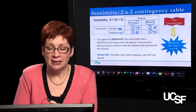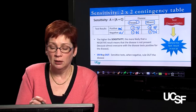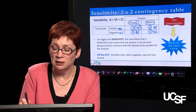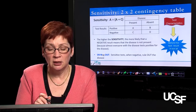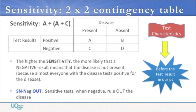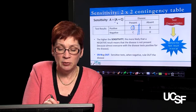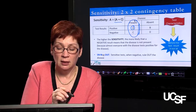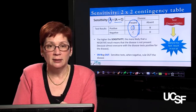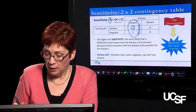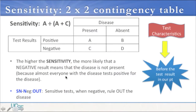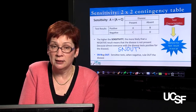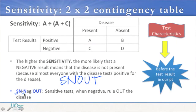Sensitivity is the proportion of people who have the disease who also test positive. The mathematical formula is A over A plus C — A plus C being all people in whom disease is present as the denominator, and A as the numerator. A shorthand to remember sensitivity is the acronym SNOUT: a Sensitive test, when Negative, helps us rule OUT a disease. This makes intuitive sense — a highly sensitive test, say 99% sensitive, means virtually everyone who tests positive has disease in quadrant A, with very few with disease testing negative. So if the test is negative, it means the disease has been ruled out.